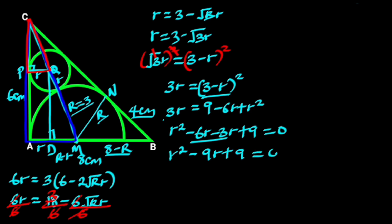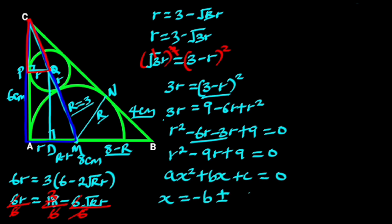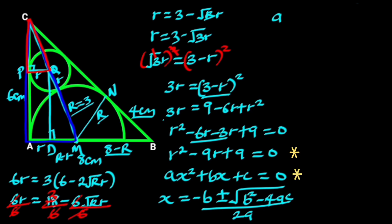And this is a quadratic equation. We will solve it using the quadratic formula. Given a quadratic equation Ax² plus Bx plus C equals 0, x equals (minus B plus or minus square root of B² minus 4AC) all over 2A. Comparing the two equations, A equals 1, B equals minus 9, and C equals 9.